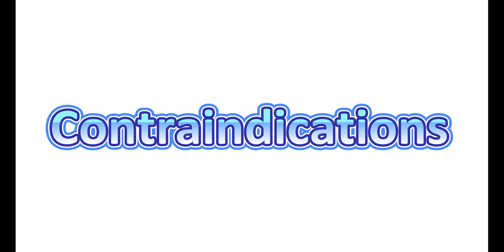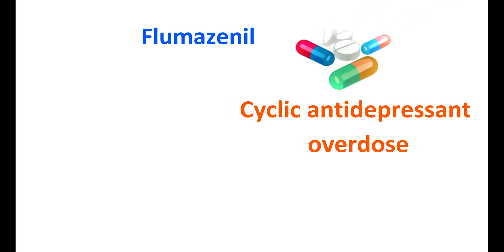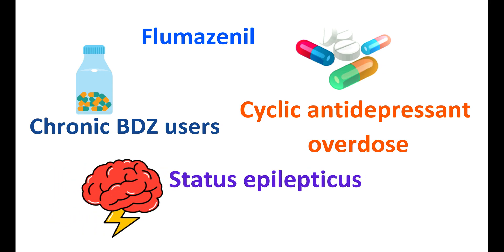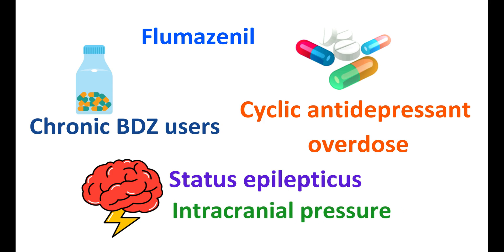Now let us know the contraindications of this medication. Flumazenil should be avoided in people with serious symptoms of cyclic antidepressant overdose — those having excessive tremors, muscle twitching, cardiac arrhythmias, dry mouth, and dilated pupils. Flumazenil is also contraindicated in chronic Benzodiazepine users, as tolerance and dependence may have developed and use may increase withdrawal symptoms. It is also contraindicated in situations where Benzodiazepines are used to control life-threatening situations, such as status epilepticus, uninterrupted convulsions, or to control intracranial pressure, because in such situations the risk of seizures is severely pronounced.